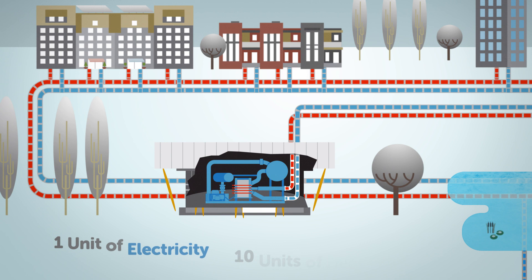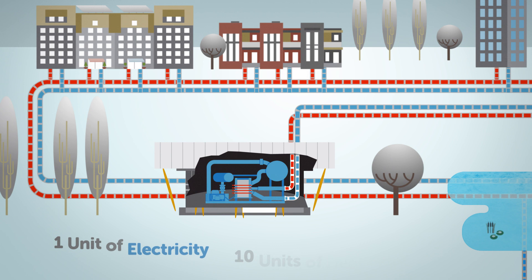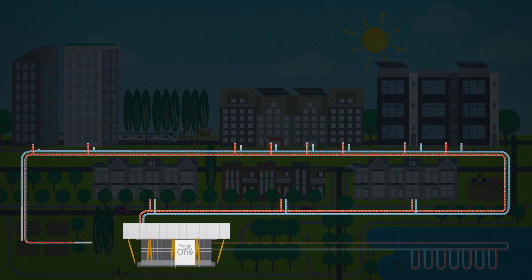Here, a large heat pump works its energy efficiency magic. It only uses one unit of electricity to transfer 10 units of heat energy into the system. That's about 10 times more efficient than traditional systems.